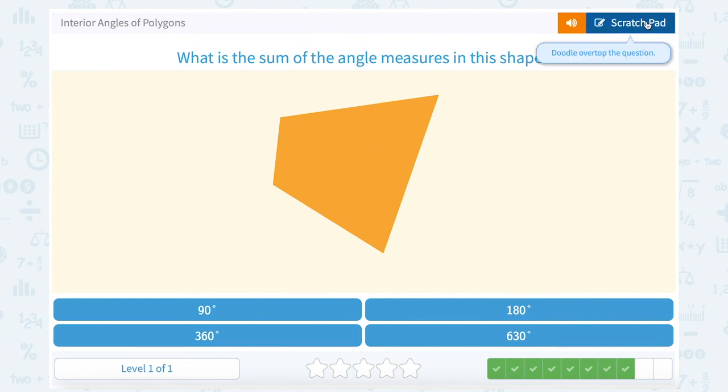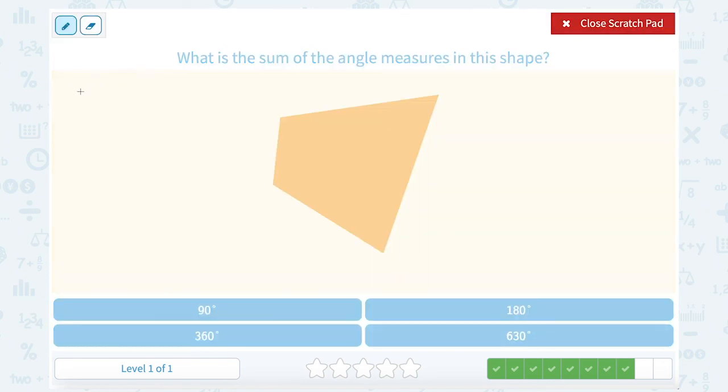What is the sum of angle measures in this shape? Let's count our sides: 1, 2, 3, 4. So any four-sided figure, we can say n minus 2 times 180. Our number of sides was 4, so 4 minus 2 times 180, which gives us 2 times 180, or 360. So 360 degrees.